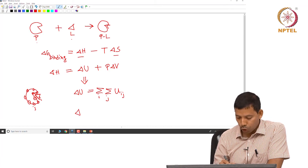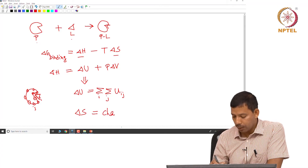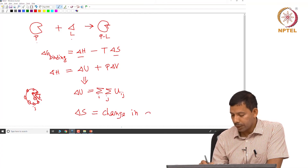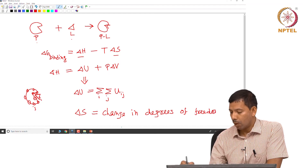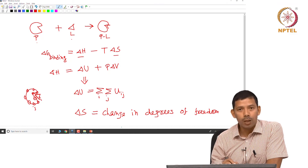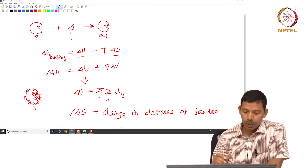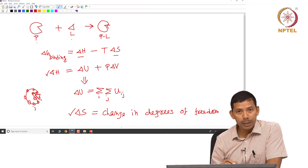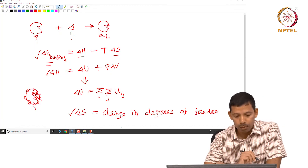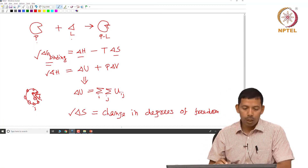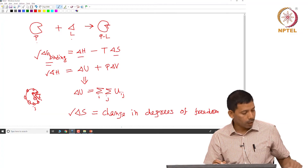Likewise, if you want to get the entropy, you calculate from statistical mechanics the change in degrees of freedom of the ligand and protein due to the binding of the ligand to the protein active site. So both entropy and enthalpy are obtained from statistical thermodynamics, and those magnitudes are then put into the thermodynamic expression to find ΔG binding. Both thermodynamics and statistical thermodynamics are applied to the same system but for different goals.